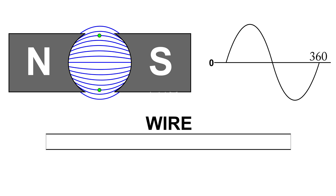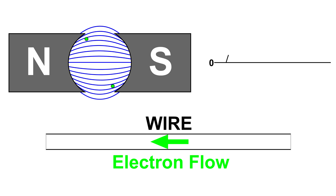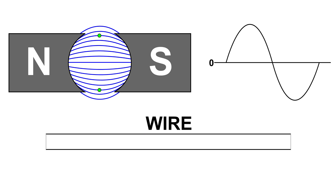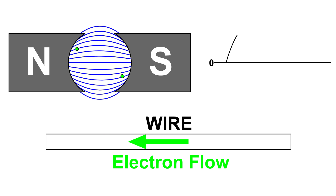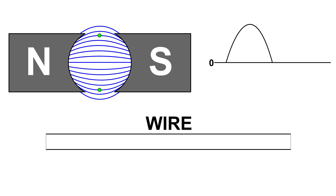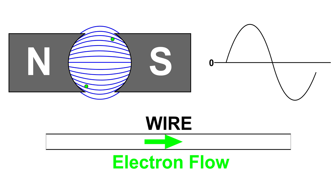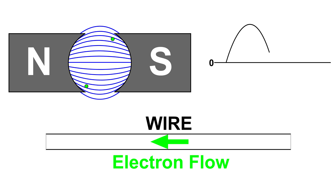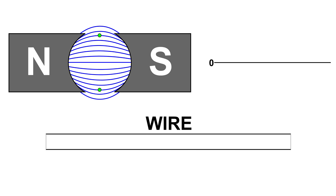At the most negative part of the sine wave, the wire loop has traveled 270 degrees. When it gets back up to zero it has traveled 360 degrees, which is exactly where we started. The wire loop continues to rotate, and I'm going to let this run for a while so you can see the relationship between the wire loop, the sine wave, and the electron flow in the wire.